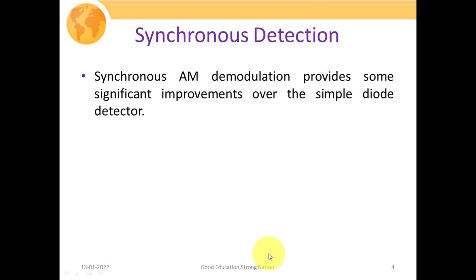Synchronous AM demodulation provides significant improvement over the simple diode detector. While studying the diode detector, we saw that due to the time constant of the capacitor, we get a distorted outcome. If the time constant value is higher, we cannot replicate signal variation instantaneously; if it is much lower, the ripple value will be higher. In both cases, we get a distorted outcome at the receiver. All these problems are rectified with synchronous detection.